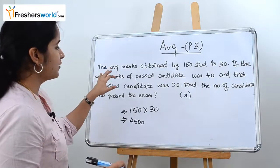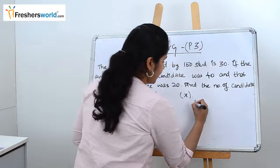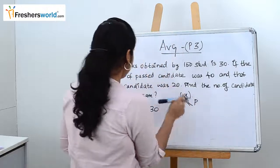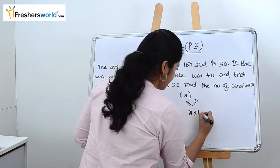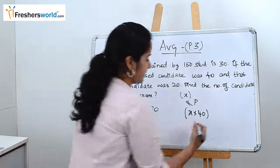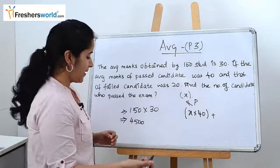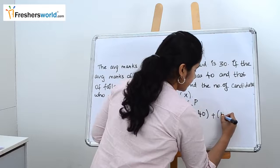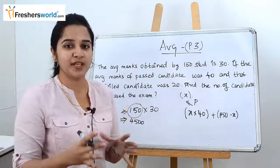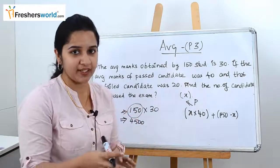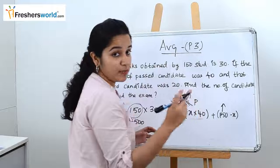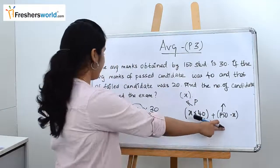They have given the average marks of the passed candidate was 40. We don't know the number of people who passed, so let's consider that as x. Number of passed candidates is x and their average marks was 40. The number of failed candidates is nothing but 150 minus x, and their average is 20. The total candidates must be the sum of both passed and failed candidates.